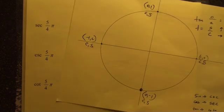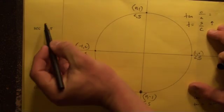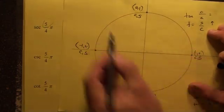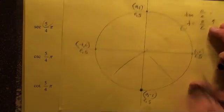There we go. Inverse functions. Secant 5 pi over 4. Again, what's the reference angle? What's 180 divided by 4? Bam. 45 degrees. How many 45s? Five of them. One, two, three, four, five.